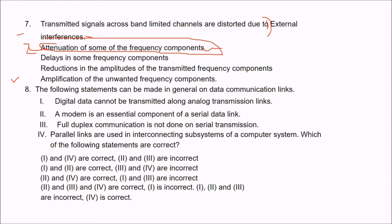Question 8: the following statements are made about data communication links. First, digital data cannot be transmitted along analog transmission links. Second, a modem is an essential component of a serial data link. Third, full duplex communication is not done as serial transmission. Fourth, parallel links are used in interconnecting subsystems of a computer system. Which are correct?